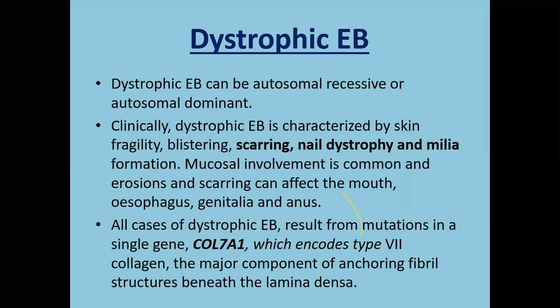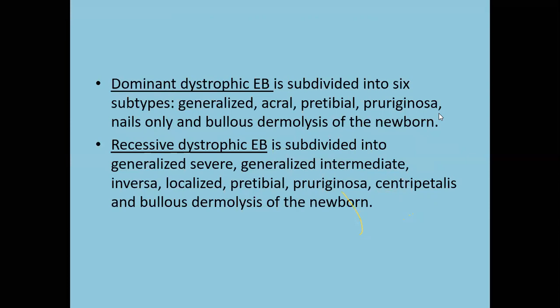Dystrophic EB can be autosomal recessive or autosomal dominant. Autosomal recessive is lethal; autosomal dominant survives. Clinically, dystrophic EB is characterized by skin fragility, blistering, scarring, nail dystrophy, and milia. Mucosal involvement is common — erosions and scarring affect the mouth, esophagus, and genitals. Most are due to mutation of collagen 7A1 gene, which is a major component of anchoring fibrils. Dominant dystrophic EB is subdivided into six subtypes: generalized, acral, pretibial, pruriginosa, and bullous dermolysis. Recessive dystrophic EB is subdivided into severe generalized, generalized intermediate, inversa, localized, pretibial, pruriginosa, centripetalis, and bullous dermolysis of newborn.